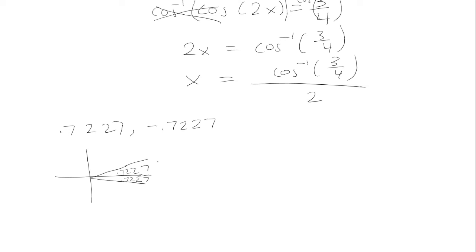So if we go counterclockwise, it's positive 0.7227. If we go clockwise, it's negative 0.7227. And because we want to find all the solutions, we have to add 2 pi n. So that will be 0.7227 plus 2 pi n.